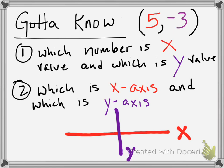You've got to know which number is the x value and which number is the y value. So in this set of ordered pairs, 5, negative 3 — 5 is our x value, negative 3 is our y value. You also need to know which one is the x axis and which one is the y axis. The x axis is the horizontal line and the y axis is the vertical line.